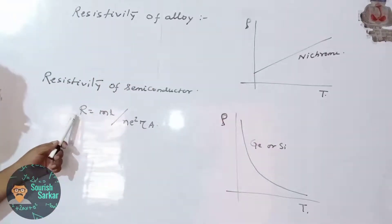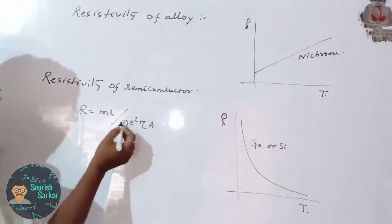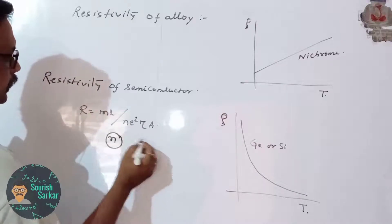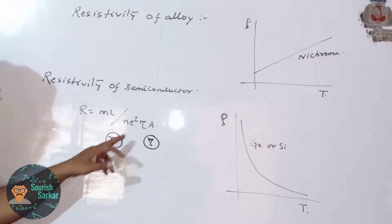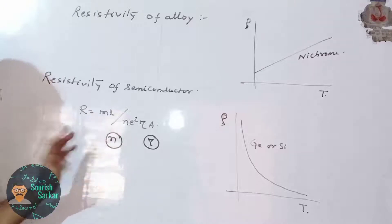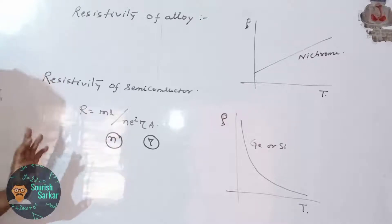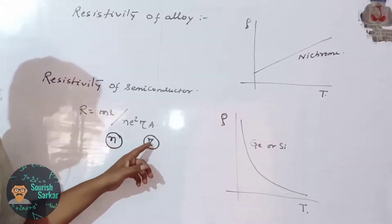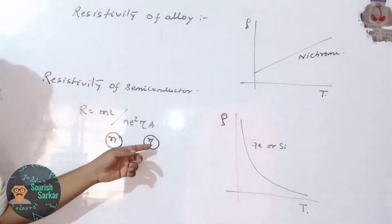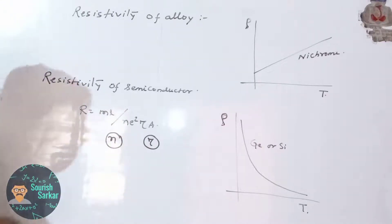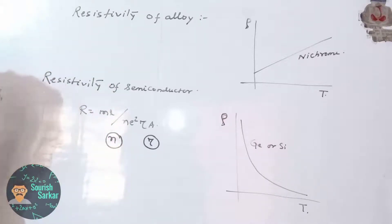We know that resistance R is equal to ml divided by n·e²·τ·A. Here we see two factors: one is n and another is tau (τ). In a semiconductor, with the increase in temperature, n increases. n is the number of electrons per unit volume. At the same time, the relaxation time tau, that is the collision time between different particles, decreases.